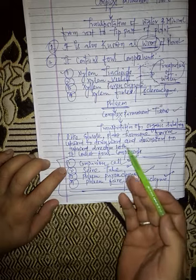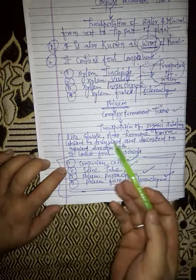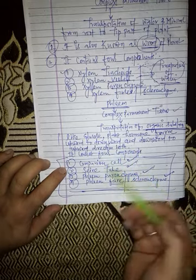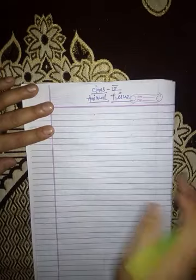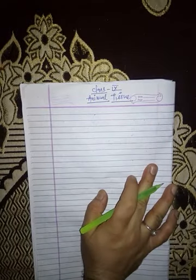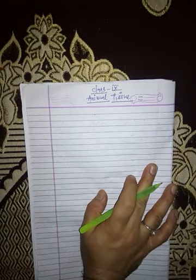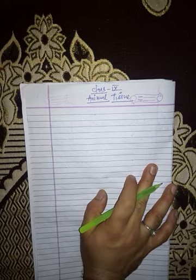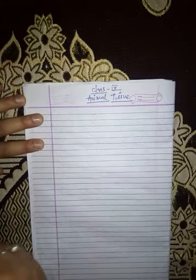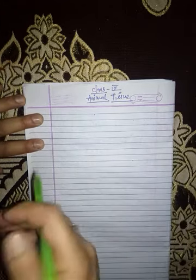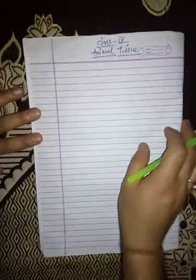The main function of phloem is the transportation of organic substances. Now, a new topic: animal tissue. You know that plant tissue contains plant cells and animal tissue contains animal cells.